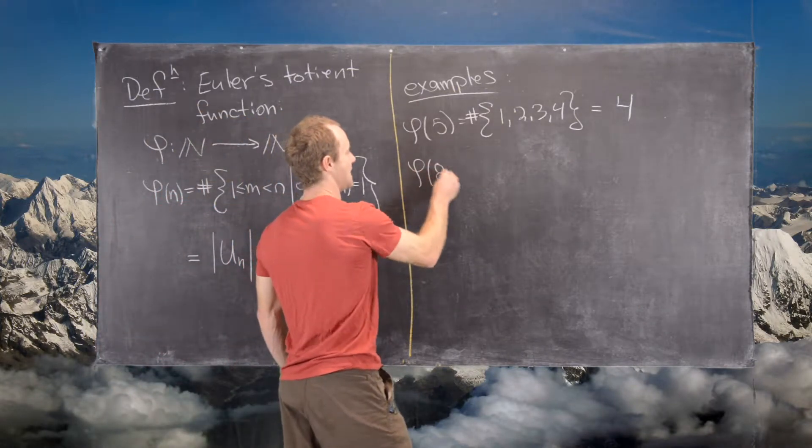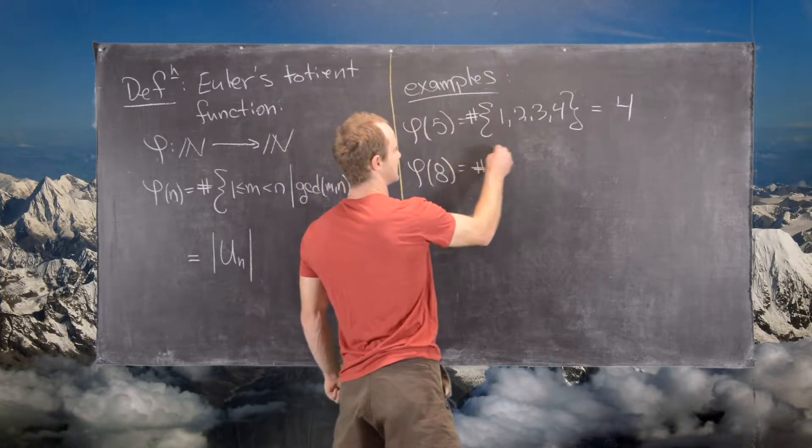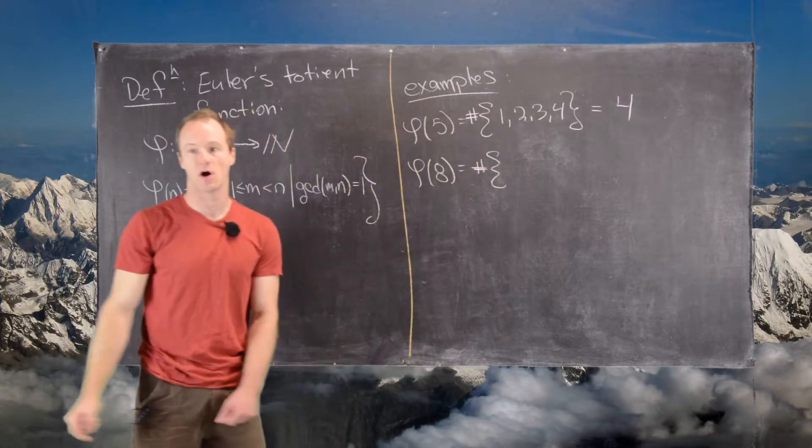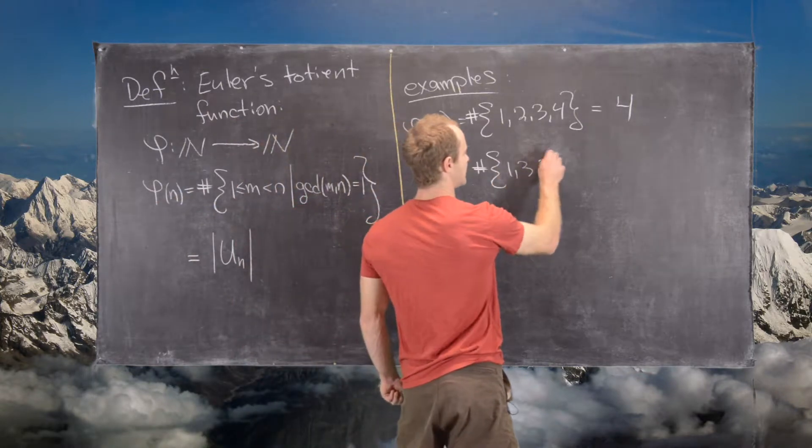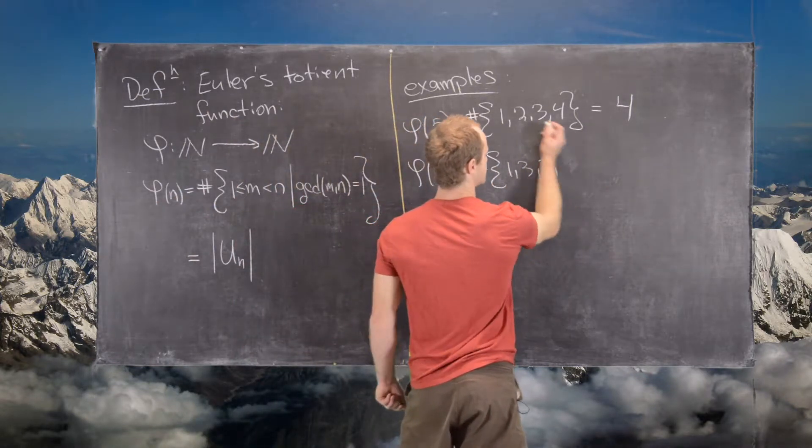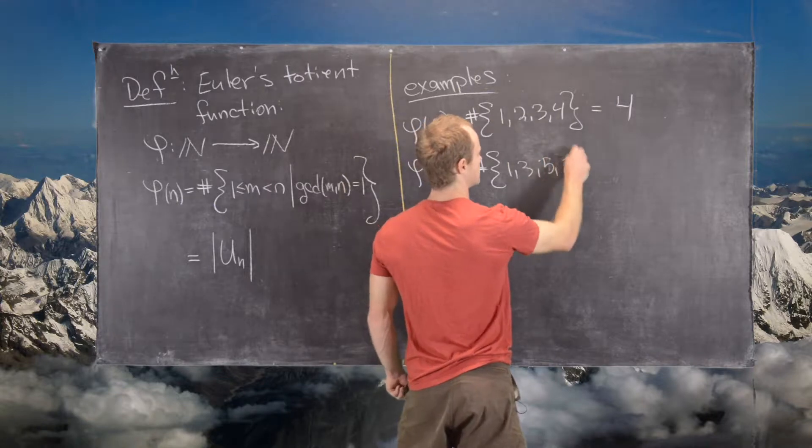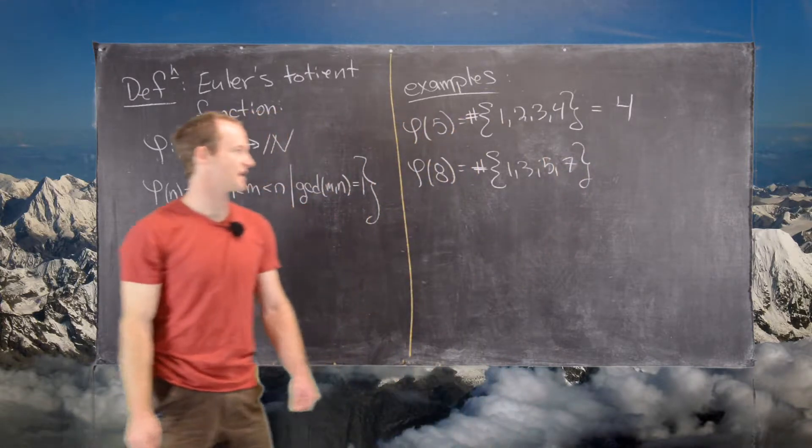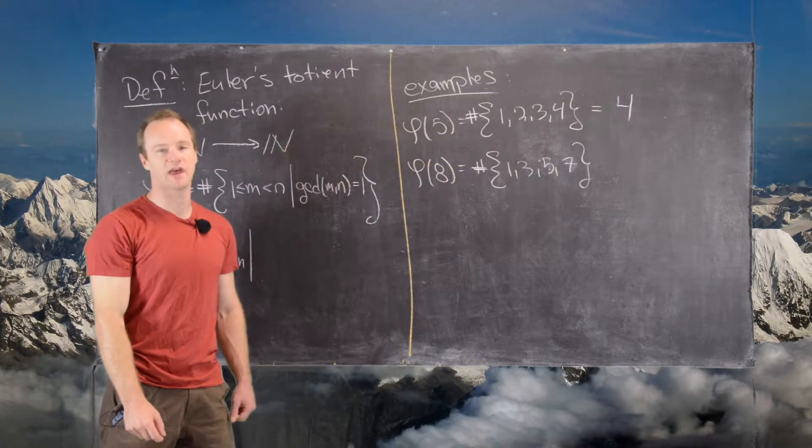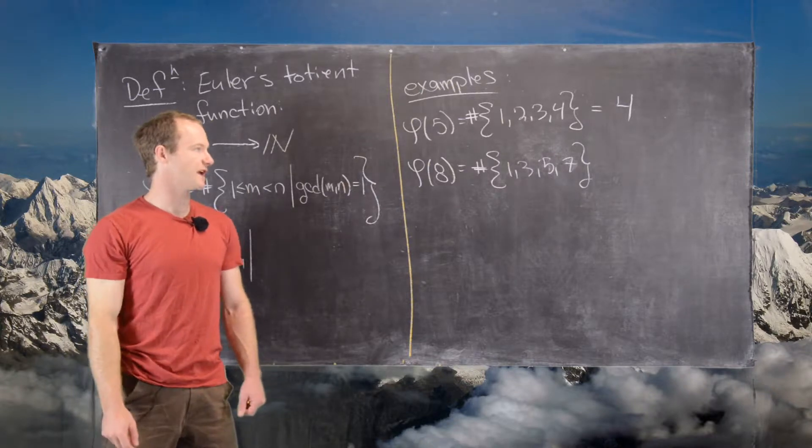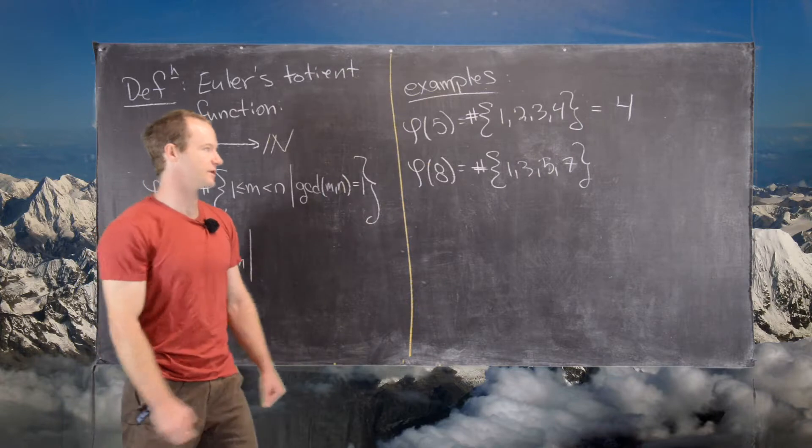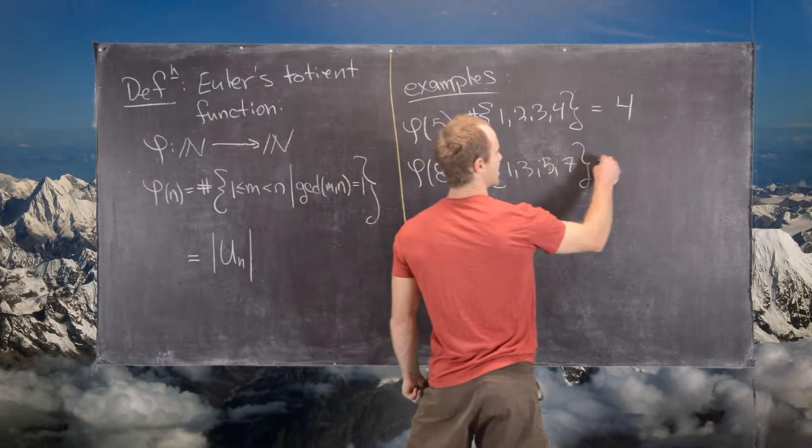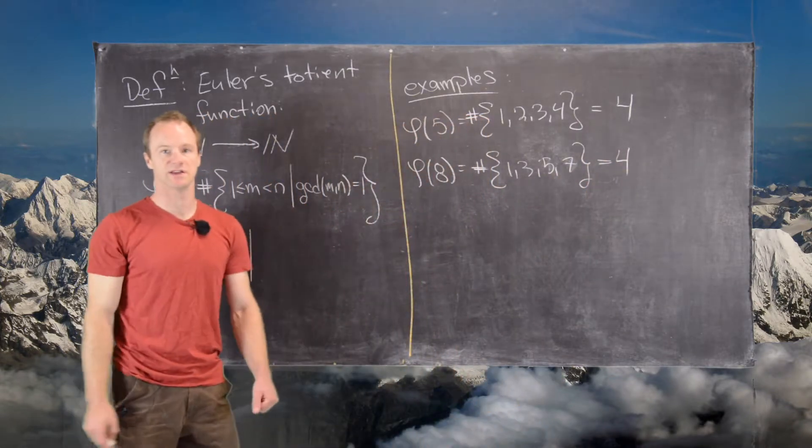So let's look at phi of 8. So that's going to be the number of, and now we have to skip all even numbers. So here we have 1, 3, 5, 7. So notice the GCD of 2 with 8 is 2, 4 with 8 is 4, and 6 with 8 is also 2. And so those are not 1, so we can't keep those. So again, we also get 4 in this case.